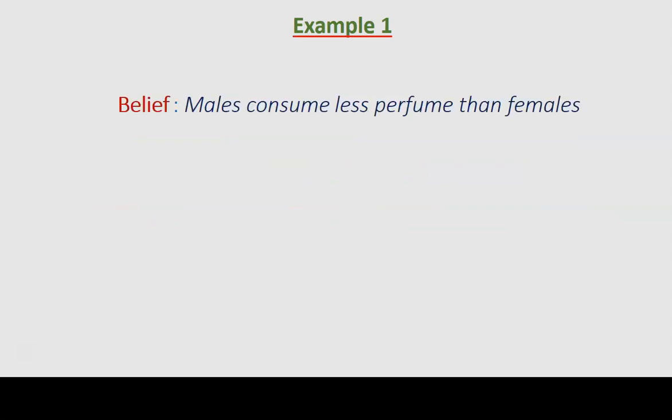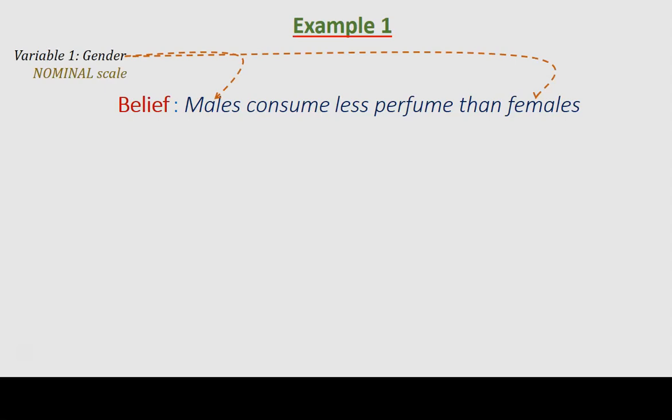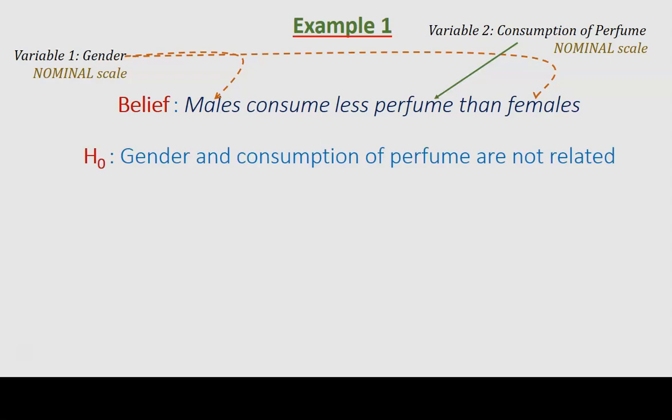We discussed the example where our belief was that males consume less perfume than females. Gender is measured in nominal scale, taking two forms: male and female. Consumption of perfume is also measured in nominal scale — high, medium, or low consumption. We can also measure consumption in ratio scale, but here we presume it is measured in nominal scale. So the null hypothesis would be: gender and consumption of perfume are not related.